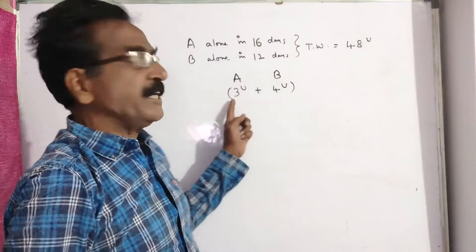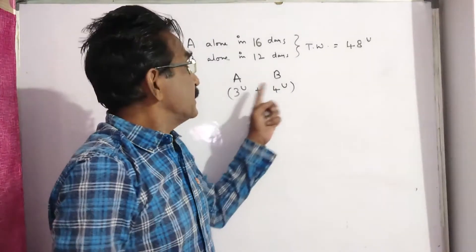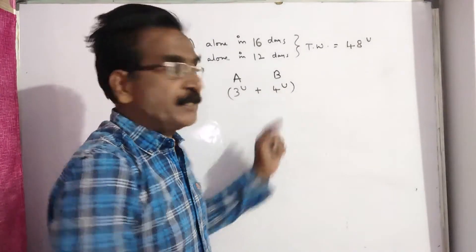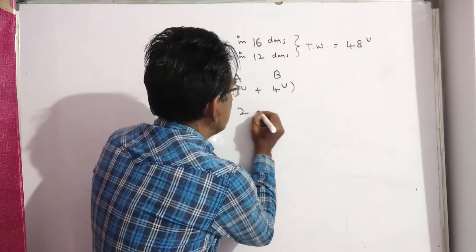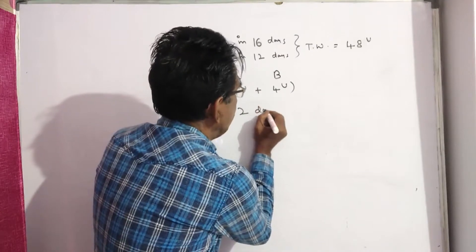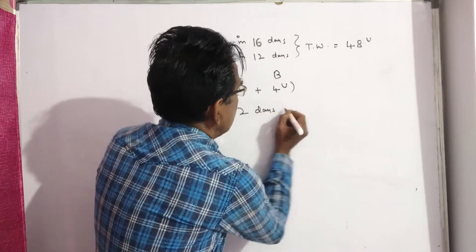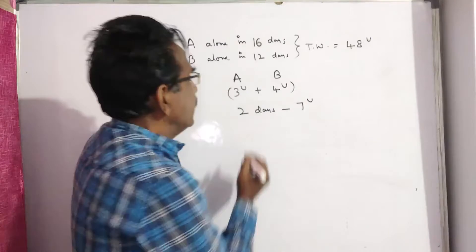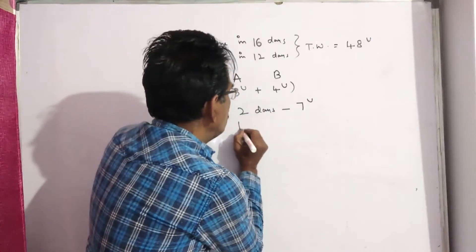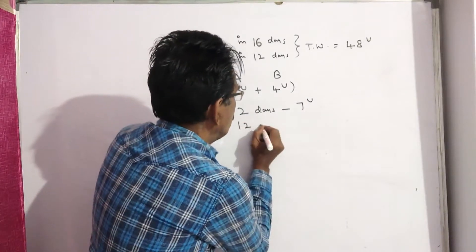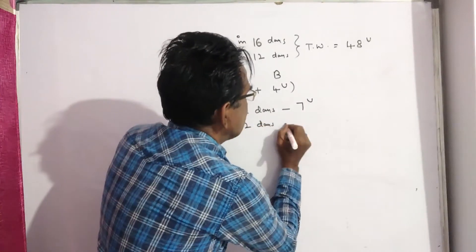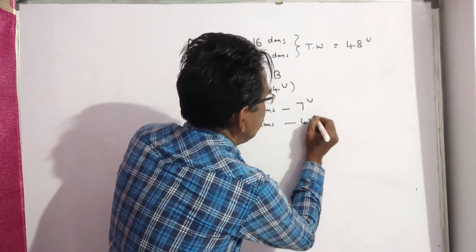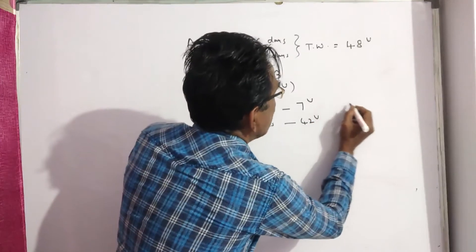First day A completes 3 units, second day B completes 4 units. So in two days, 7 units of work will be completed. In 6 cycles of two days (12 days), 6 times 7 = 42 units of work will be completed.